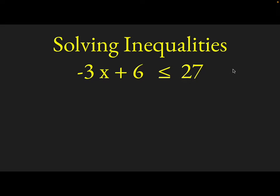Well the first algebra move that most of us would make would be to add negative 6 to both sides, otherwise known as subtracting 6 from both sides, and that will leave you with negative 3x on the left because you'll have gotten rid of the 6, and then 27 minus 6 is 21.